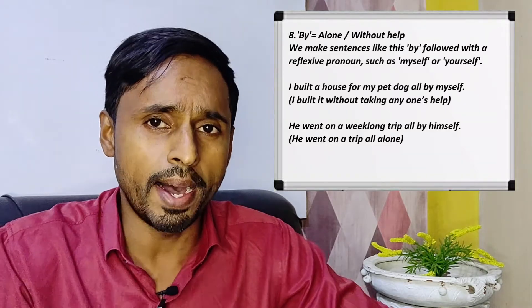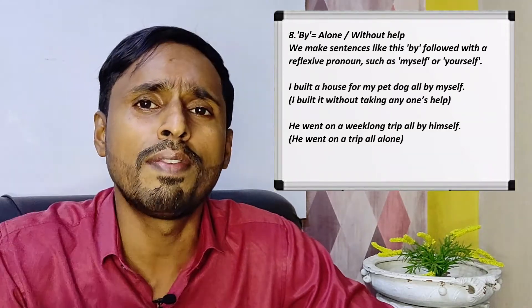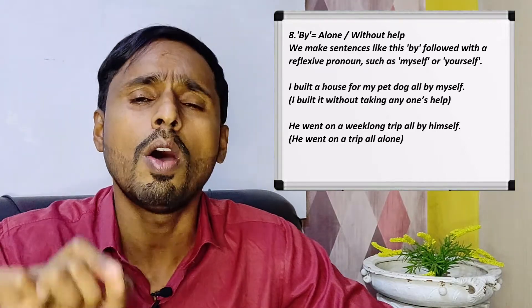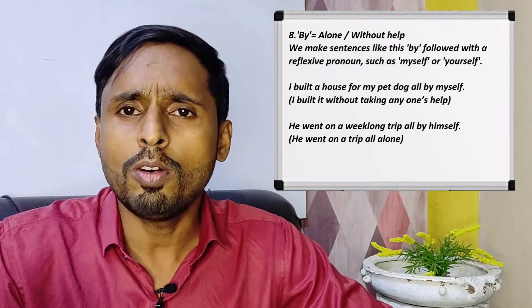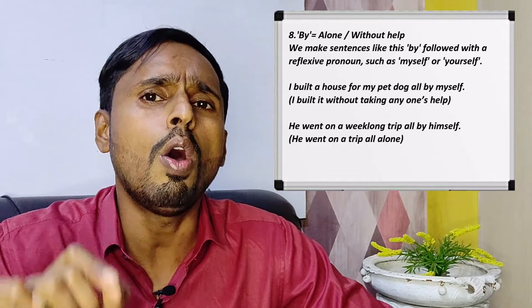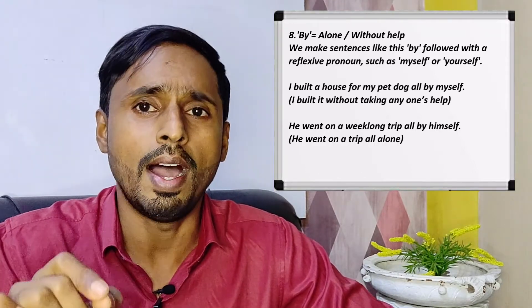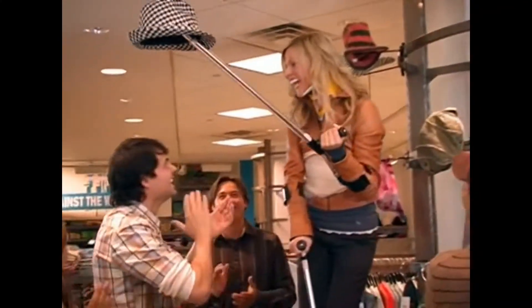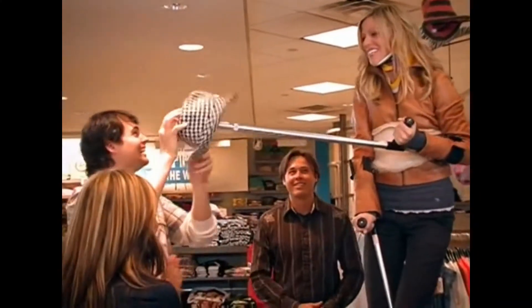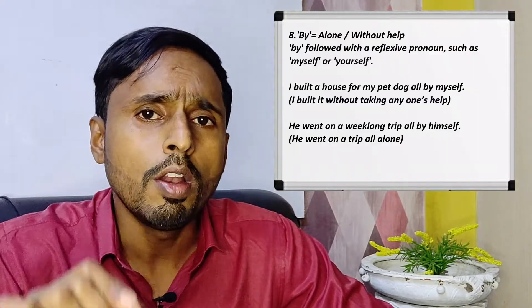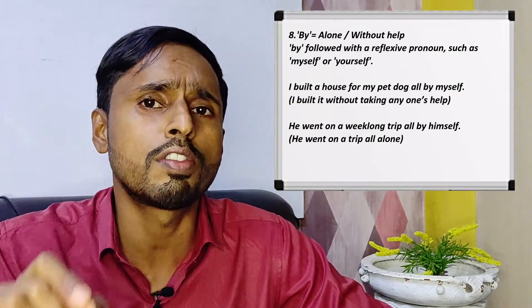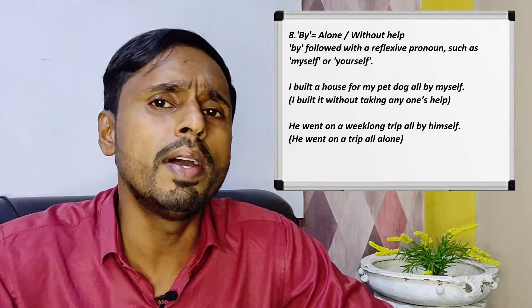We also use 'by' to mean doing something alone or without any help. We make sentences like this: 'by' followed by a reflexive pronoun such as 'myself' or 'yourself'. I built a house for my pet dog all by myself — means I built it without taking anyone's help. He went on a week-long trip all by himself, means he went on a trip all alone. Nobody accompanied him.